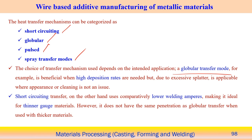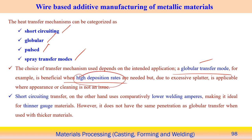Metal transfer can occur in four different modes: short circuiting, globular, pulse, and spray. The choice depends on the intended application. In globular transfer mode, the molten metal droplet becomes bigger than the electrode diameter. Gravitational force then dominates over surface tension and electromagnetic forces, causing the heavy droplet to detach and transport to the substrate — associated with high deposition rate.